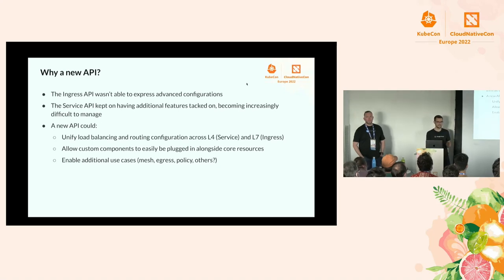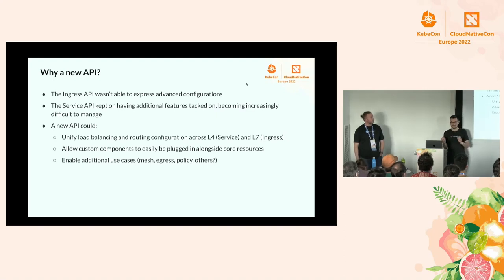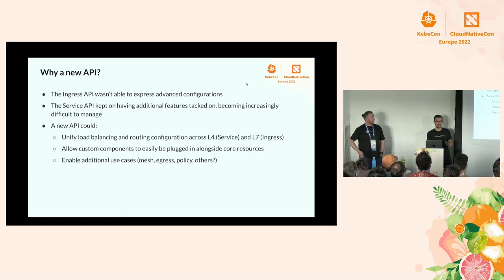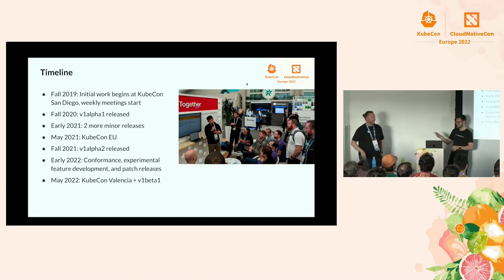A new API hopefully offers a solution. We can unify load balancing configuration across L4 — which was the service API — and L7 ingress. We can allow custom components to be easily plugged into core resources, so extensibility is a huge part of this API. We want to enable some additional use cases: mesh, egress, policy, and even more wild ideas like GRE tunnels and VPNs.